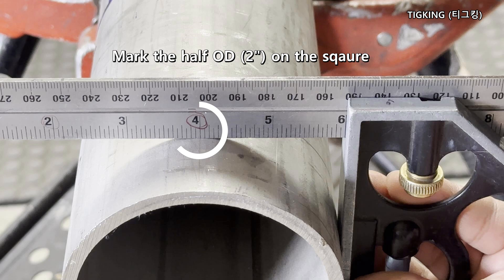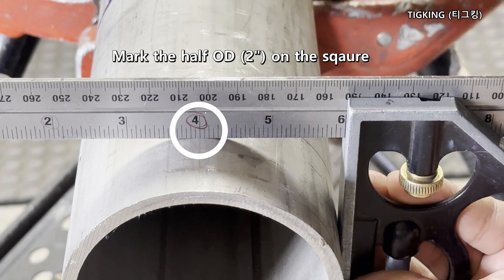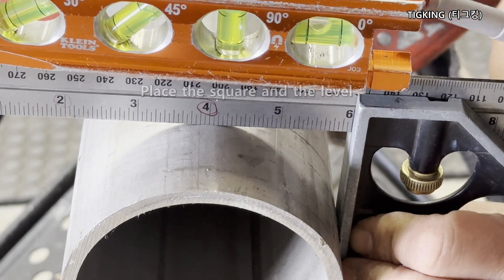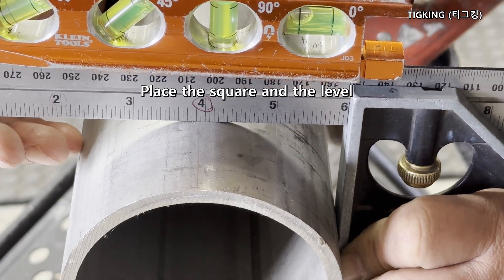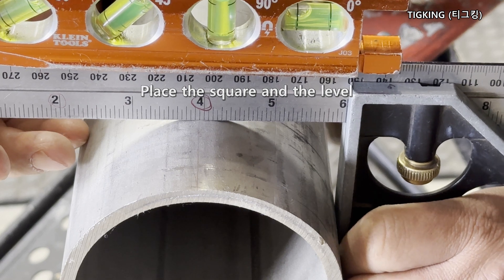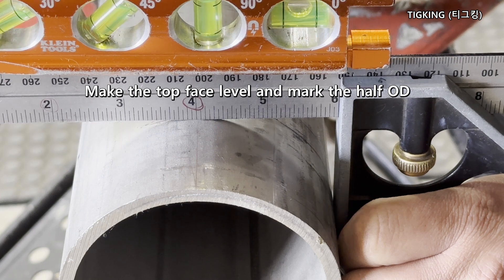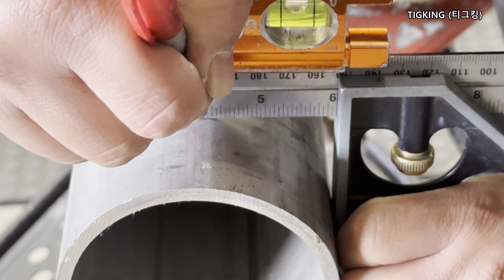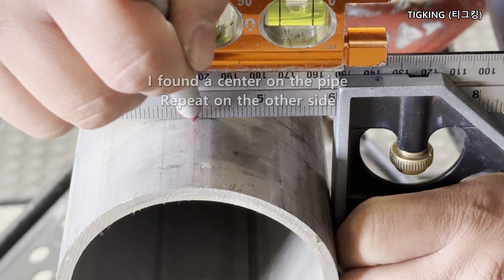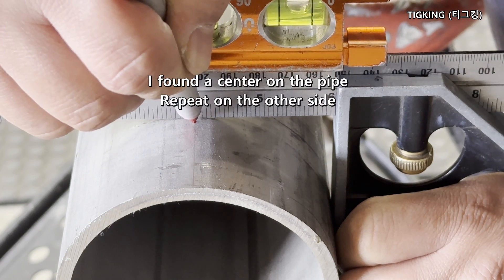Mark the half of outside diameter on the square. Place the square and the level. Make the top face level and mark the half OD. Repeat this on the other side of the pipe.